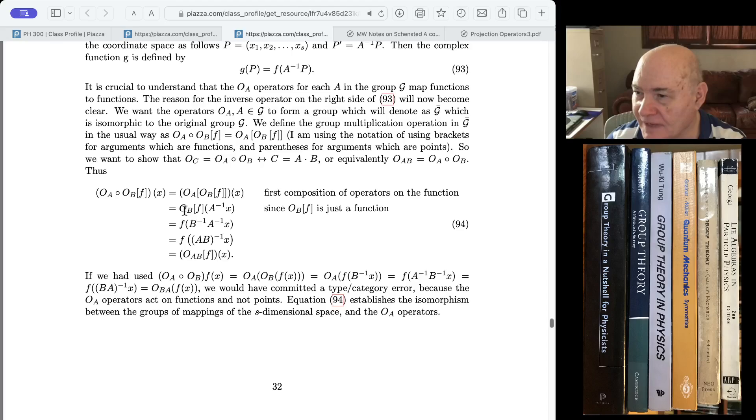So now, the general definition is whenever we have an OA on a function applied to a point, we take that function. In this case, it's OB F. So we take OB F applied to the A operator, A inverse X. Remember, think of this as just a function. OA on any function applied to X is that function evaluated at the point A inverse X. Now, we do it again. We have another function, OB F, evaluated at the point A inverse X. So how do we do it? We take F, apply the operator, B inverse, and then apply it to the point A inverse X. I could have put another set of parentheses here, but I didn't. Now, this is equal to F, the argument, since B inverse, A inverse, is always the same as AB inverse. So AB inverse operating on X.